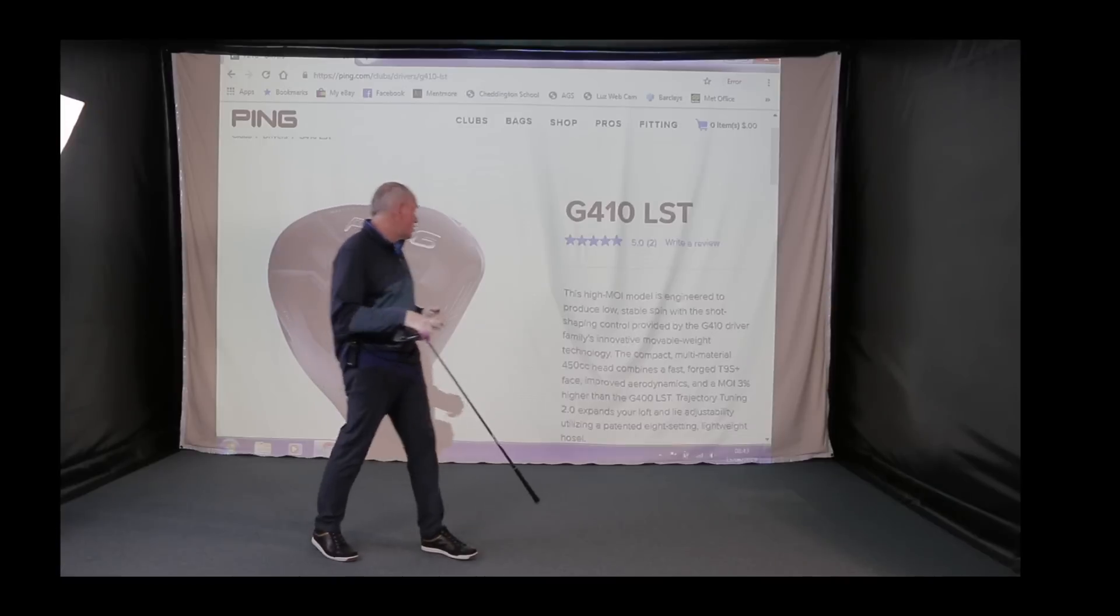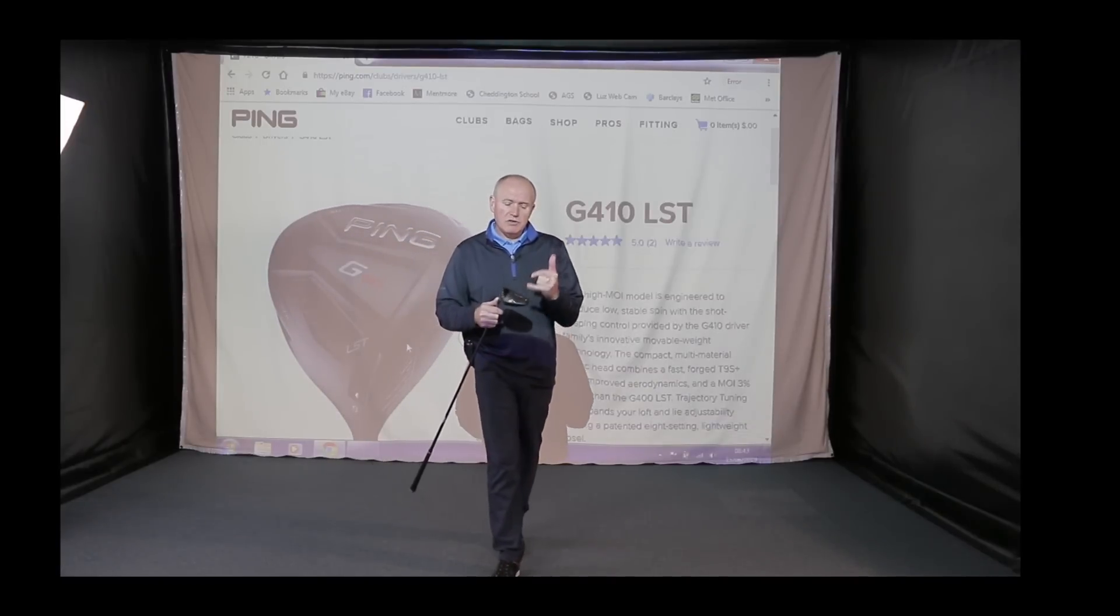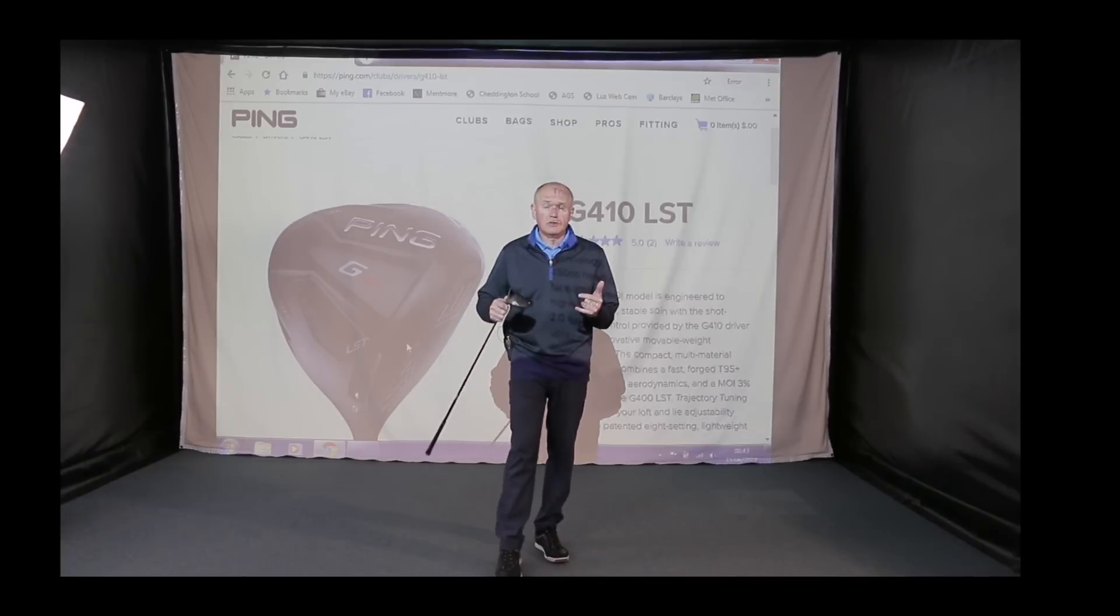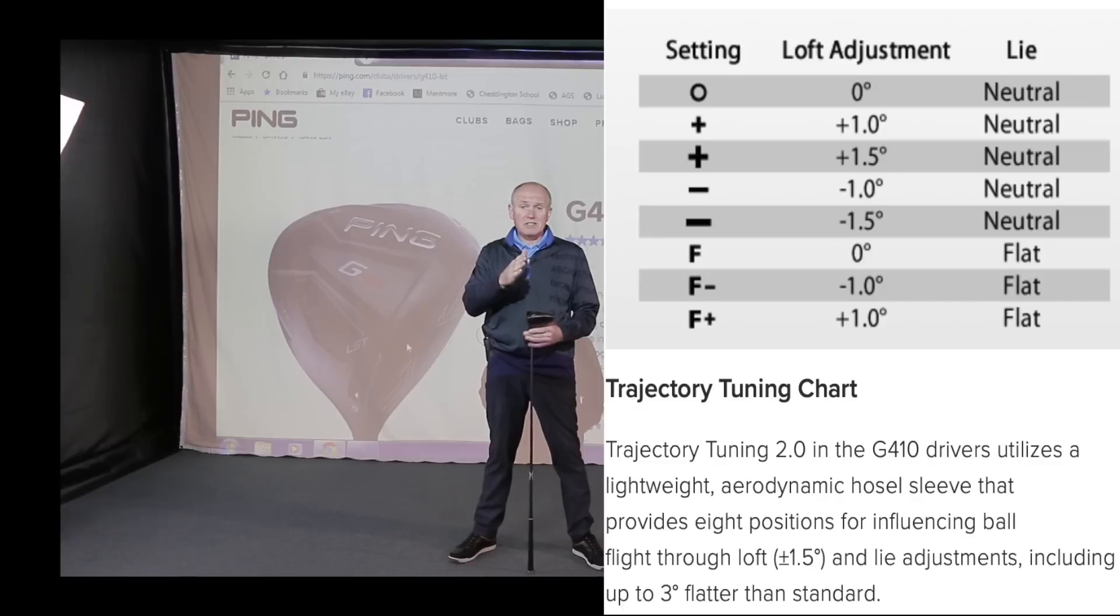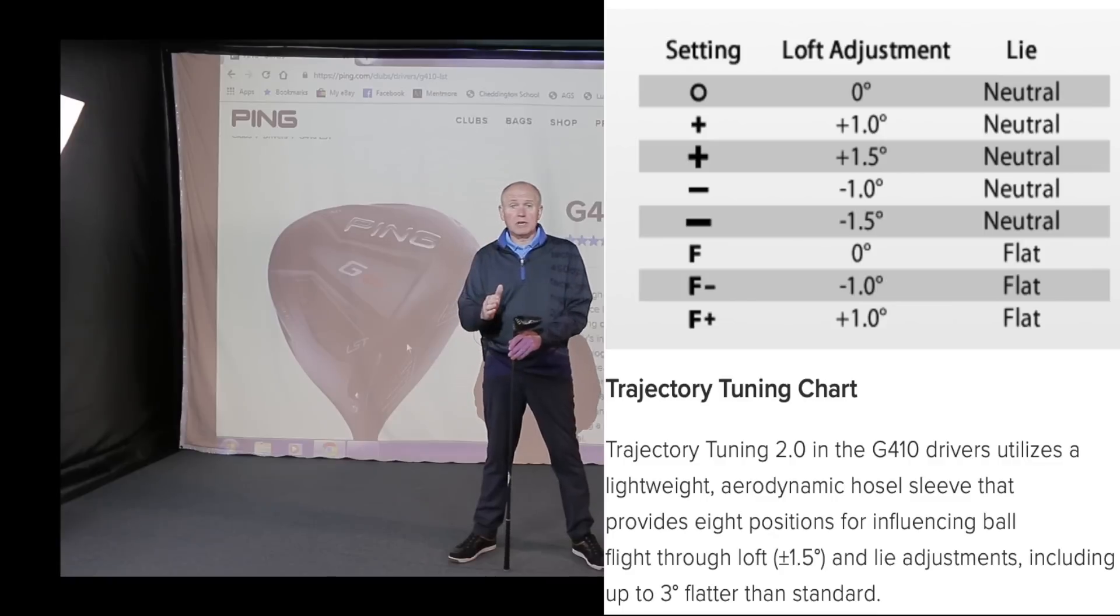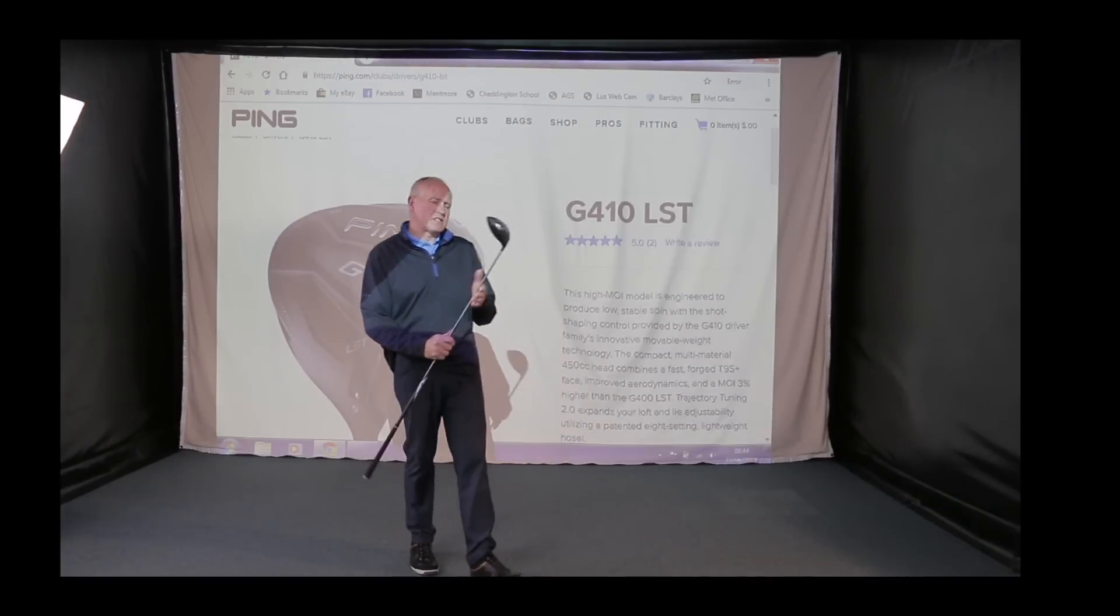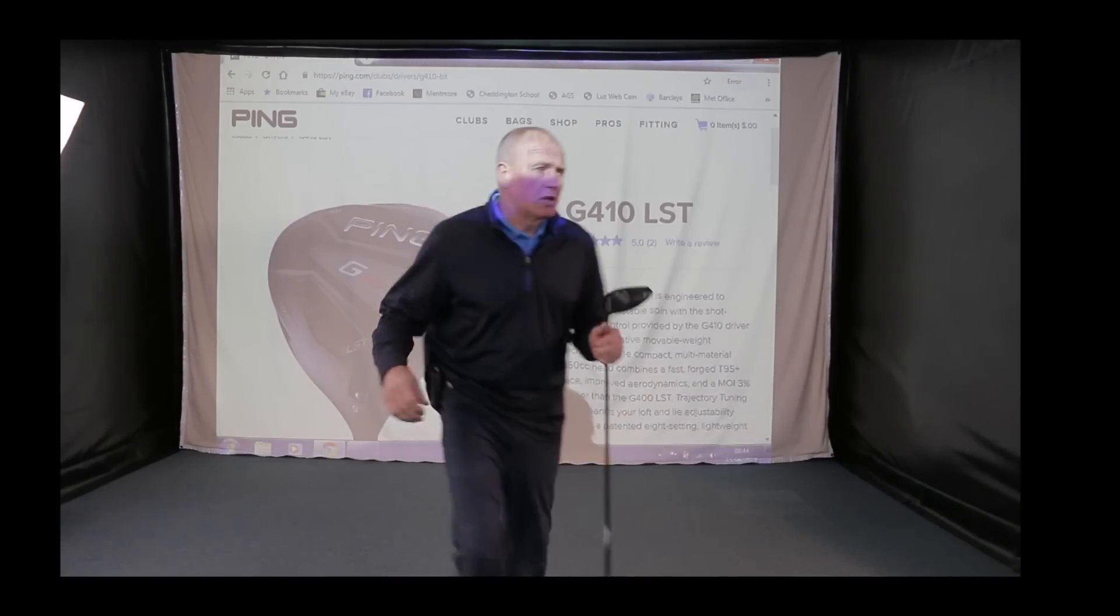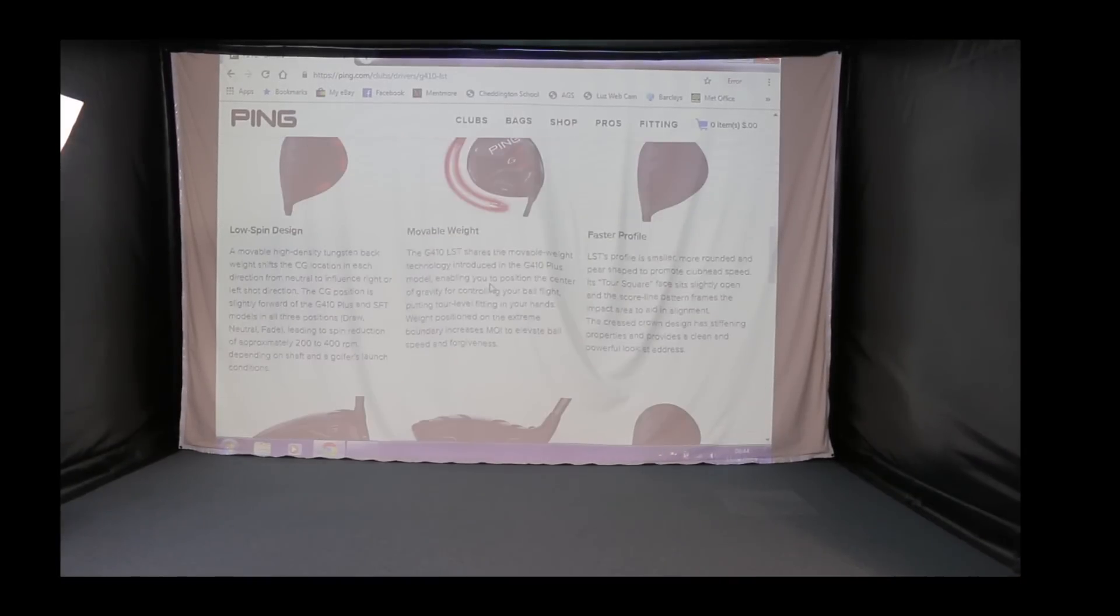Go back to that in a minute. Trajectory tuning: eight settings. One of the big differences between G410 and G400 was in G400 we could move loft up and down 0.6 of a degree and one degree. In G410, we can move loft a full degree, one degree and 1.5, and we've also got some flat settings as well. So eight different settings in this.